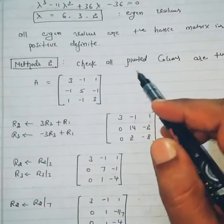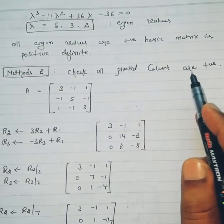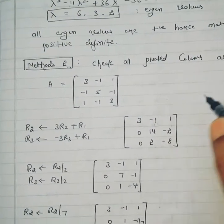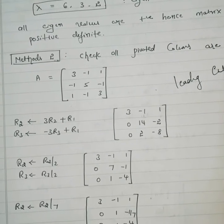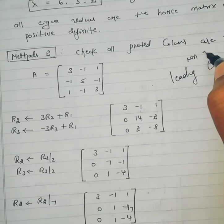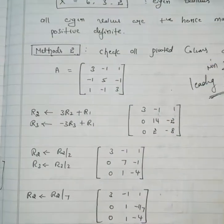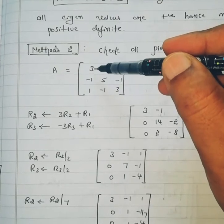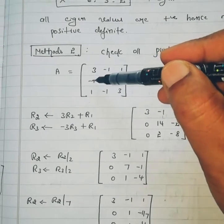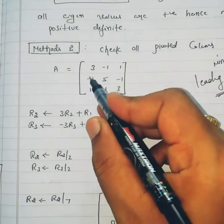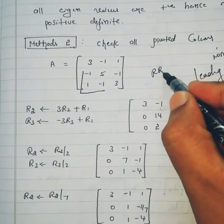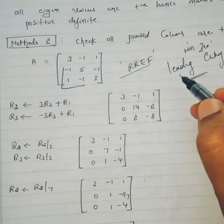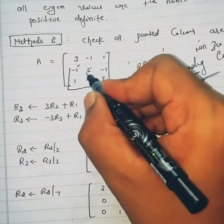Suppose you are not interested in method one, you can go for method two: check that all pivoted entries are positive. Take the given matrix. The pivoted entry is the leading non-zero entry in each row. The first element must be positive — here it is positive, no issues. But some entries are negative, so we have to make them zero. We will use the row reduced echelon form (RREF) so that these entries become zero, making it easier to identify the pivoted entries.